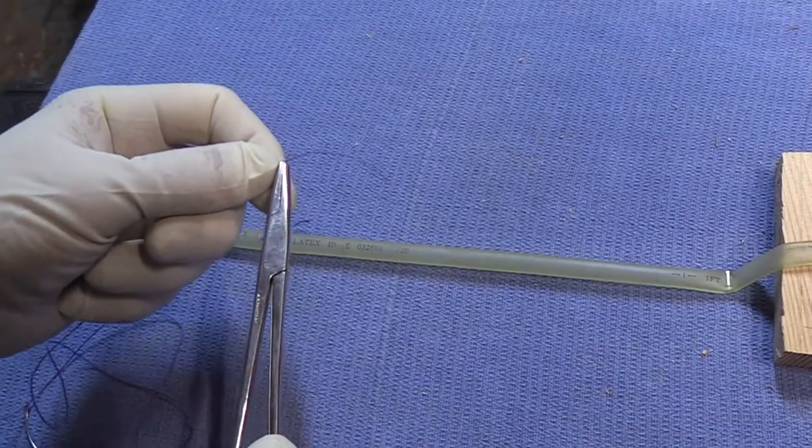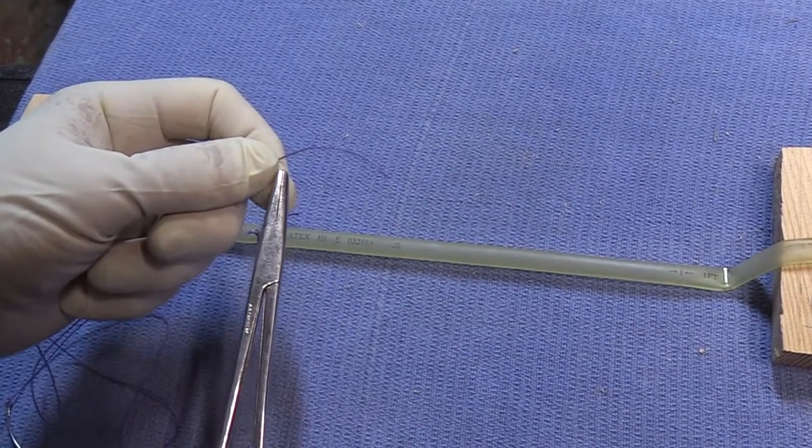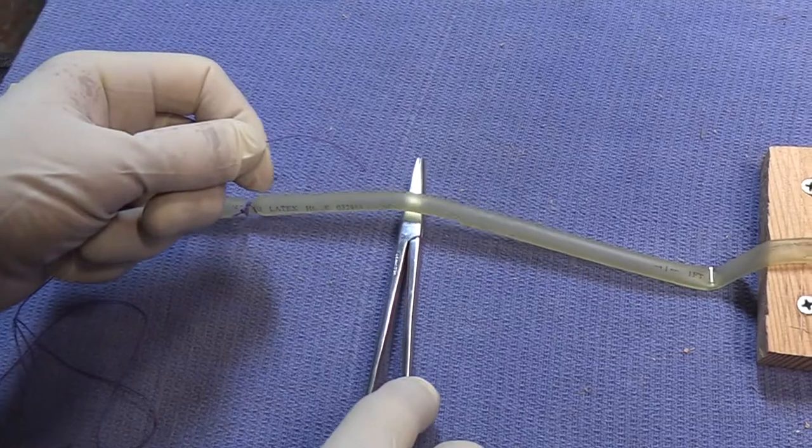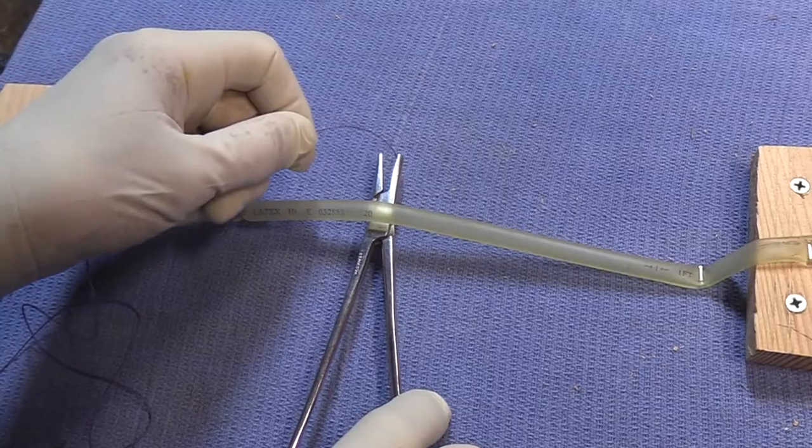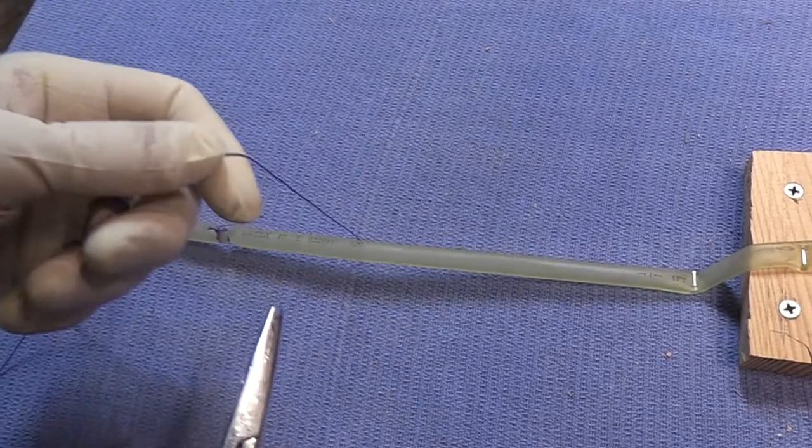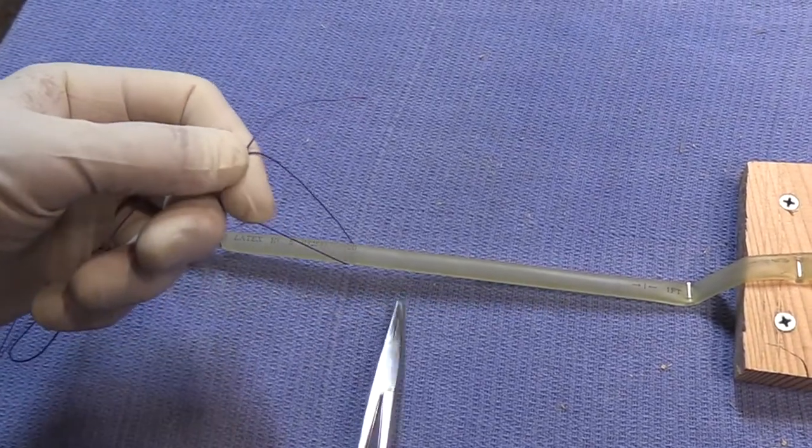We want the suture material at the end of it about two or three inches past the thumb and forefinger so that we have control. Slide the instrument underneath the cord. Open it. Close it on the end of the suture material. Pull it back. Grasp it with the thumb and forefinger.